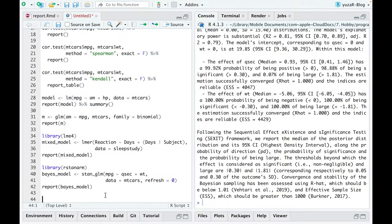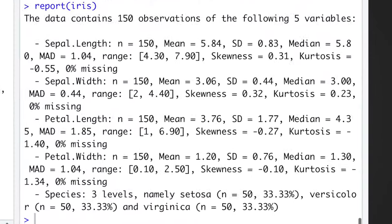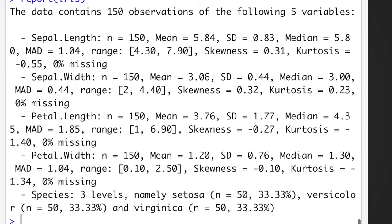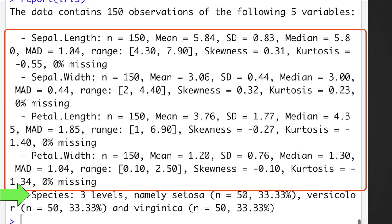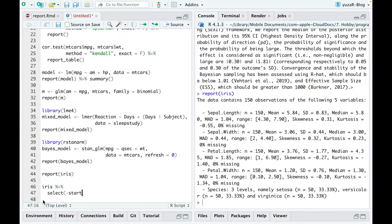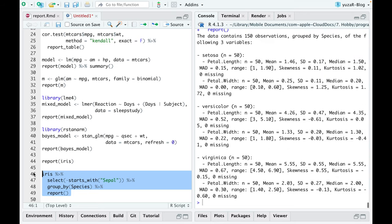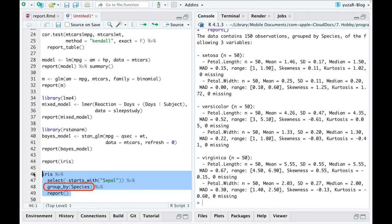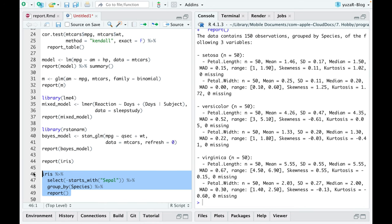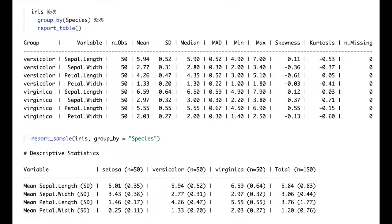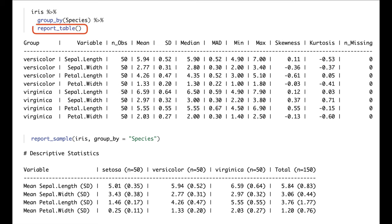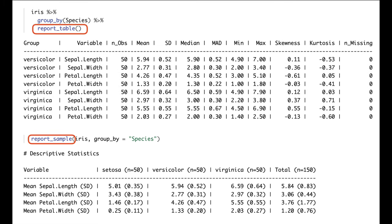You can also quickly describe your data by simply using report function on your dataset. It provides the most common descriptive statistics for every variable, doesn't matter numeric or categorical. Besides, report package works perfectly with famous tidyverse packages like dplyr. Thus, the data can be easily grouped by any categorical variable, for example species, and the descriptive stats for every level of the grouping variable will be returned. Want the same as a huge or a minimalistic table? No problems. Use report table or report sample functions on your dataset.